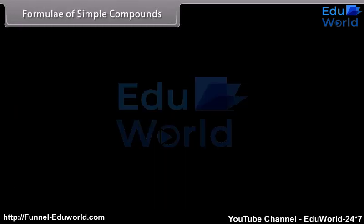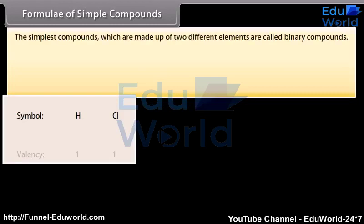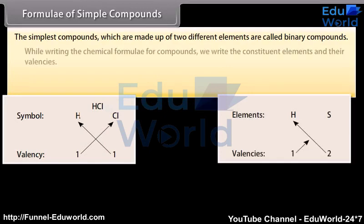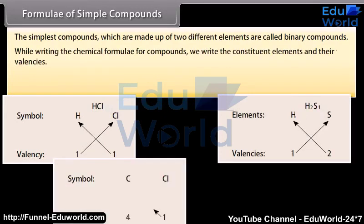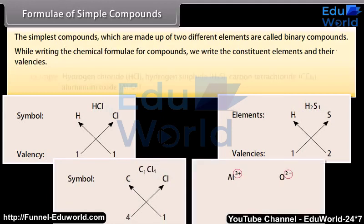The simplest compounds which are made up of two different elements are called binary compounds. While writing the chemical formula for compounds, we write the constituent elements and their valencies.